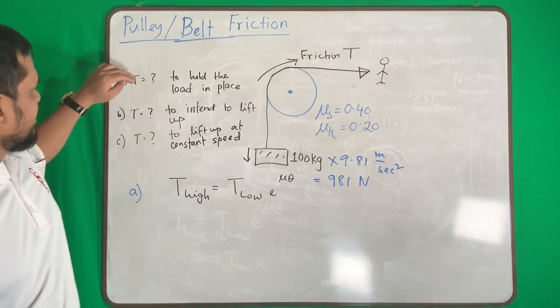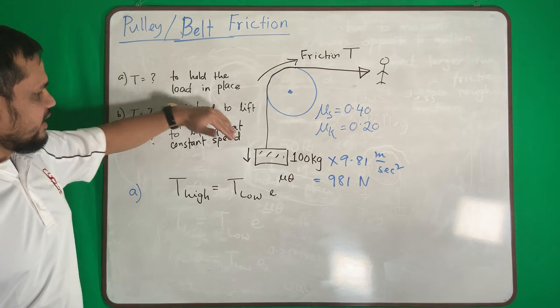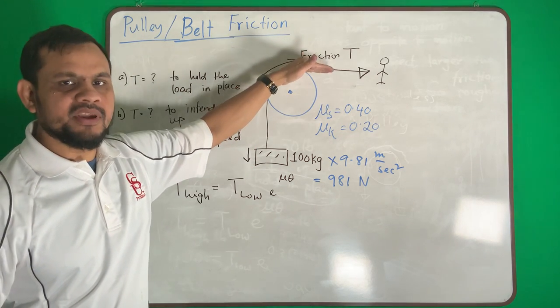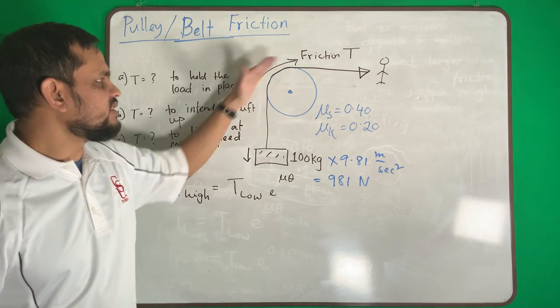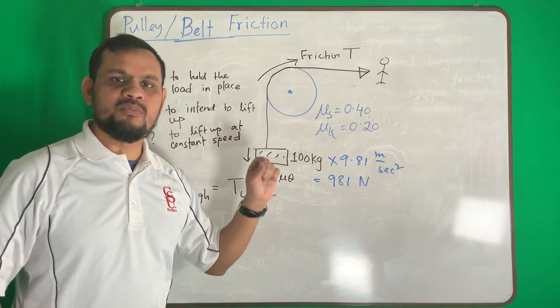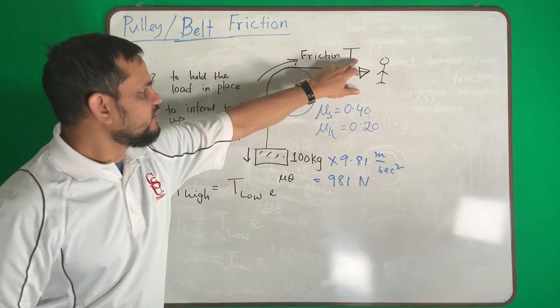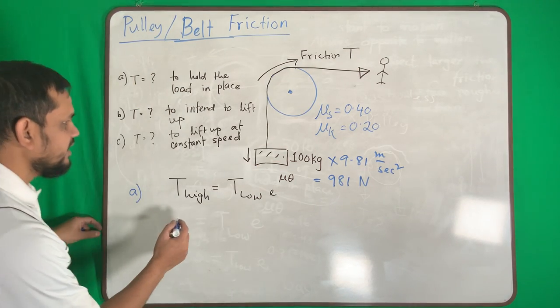Let me say it again. Case number one: the body is going down, I am holding it, so friction force is helping me. Because what is going down, friction is this way—friction is opposite to the motion. So this will be higher, this will be lower.